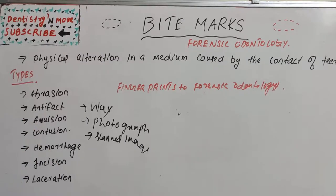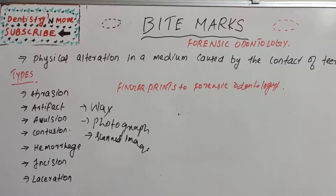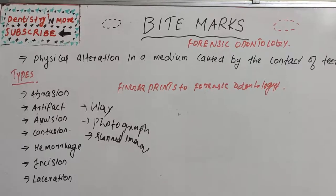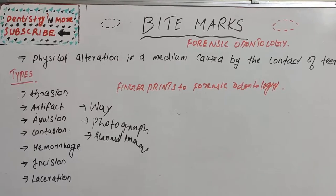Forensic dentists use several different terminologies to describe the type of bite marks. Abrasion is a scrape on the skin. Artifact is when a piece of the body, such as an earlobe, is removed by biting. Avulsion is a bite resulting in removal of skin. Contusion is a bruise of the skin. Hemorrhage is a profusely bleeding site. Incision is a clean, neat wound, and laceration is a puncture wound.